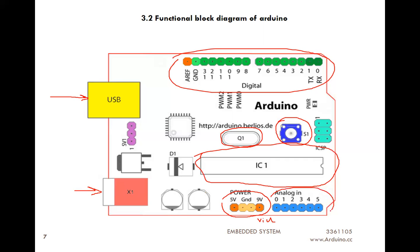Analog input pins: there are six analog pins available on the Arduino board and each pin has a resolution of 10 bits. You can interface analog sensors on each channel — there are six channels available. The FTDI chip converts USB data into TTL. Our microcontroller supports TTL logic, and when interfacing with the computer via USB port, the computer sends data in USB protocol which must be converted into serial protocol. This chip converts USB to TTL, or USB to serial communication.